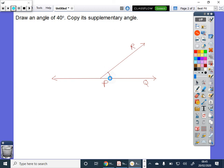QPR, this angle is equal to 40 degrees. But you have to copy its supplementary angle. That means, let it be P. You have to copy angle TPR.